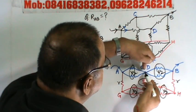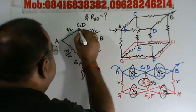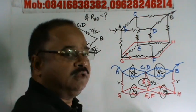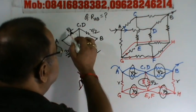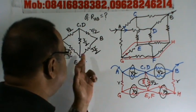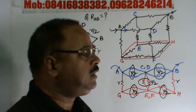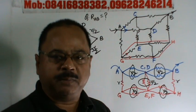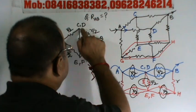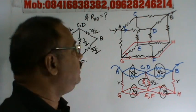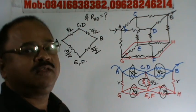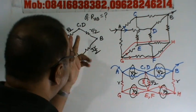Now for CD to EF: CD is the same node and EF is also the same node, with R/2 between them. Checking R/2 divided by R/2 equals 1, and 3R/2 divided by 3R/2 equals 1 — so this is a completely balanced circuit. Therefore CD and EF will be at the same potential, and this middle resistance R/2 will play no role and will not affect the circuit. The middle resistance is useless.